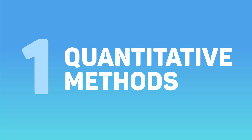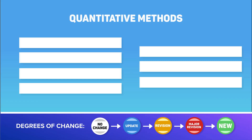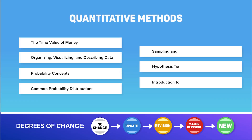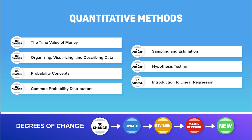Now let's go into each topic. Quantitative Methods: Quant has the same seven readings as it did in 2022, starting with the time value of money and ending with Intro to Linear Regression. So luckily, no major changes here.